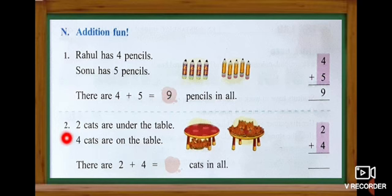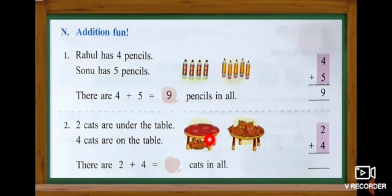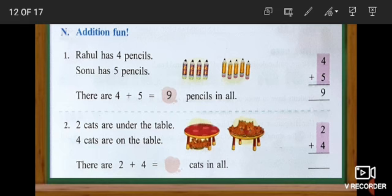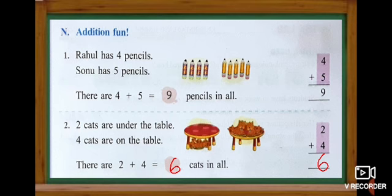Look at the next one — number two. Two cats are under the table and four cats are on the table. We are going to add it. They give number two first and then number four. Two plus four — totally: one, two, three, four, five, six. Totally six cats. When we add it vertically or horizontally we get the same answer — six.